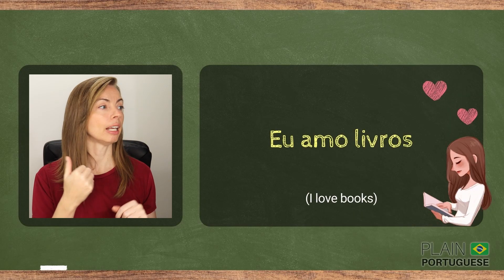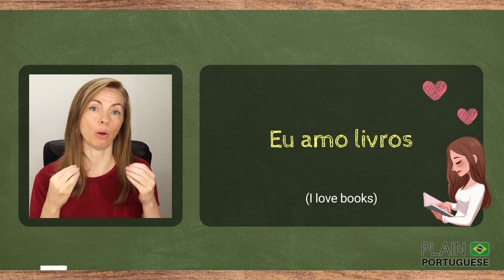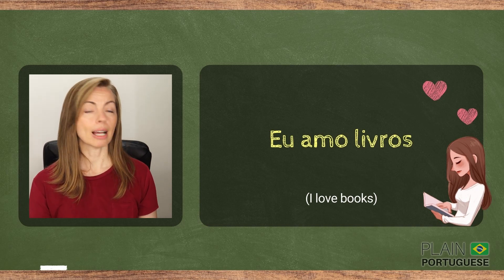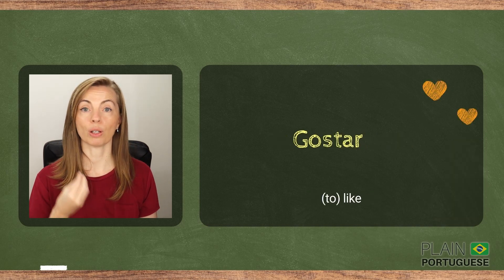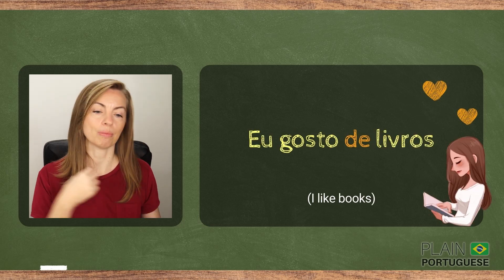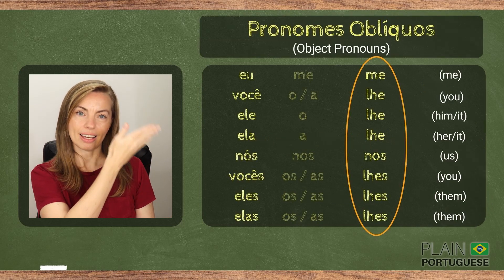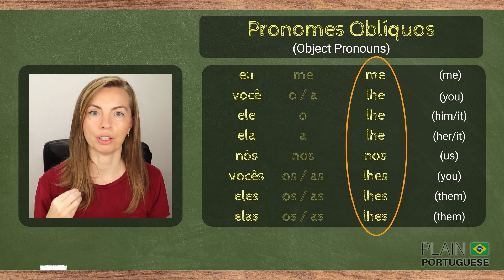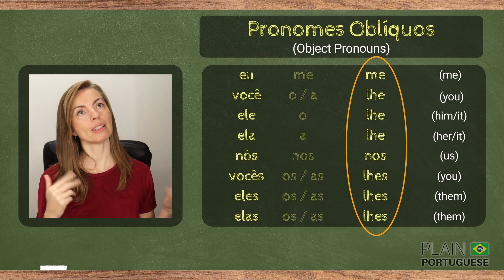Some verbs are not associated with prepositions. For example, TO LOVE — AMAR. EU AMO LIVROS. There are no prepositions required here. Some verbs are associated with prepositions. For example, GOSTAR requires the preposition DE: EU GOSTO DE LIVROS. These are the pronouns you'll be using when the verbs are associated with the preposition A or PARA.